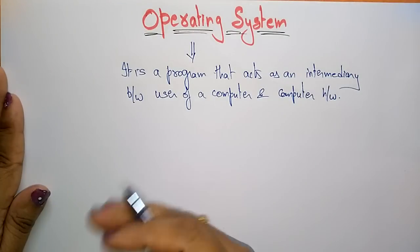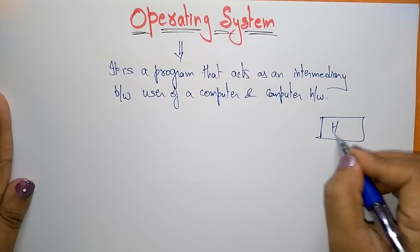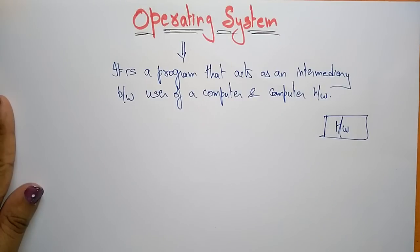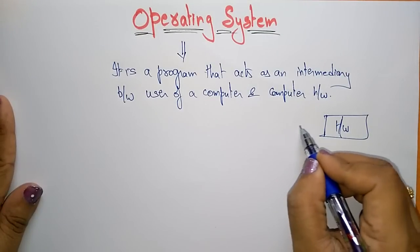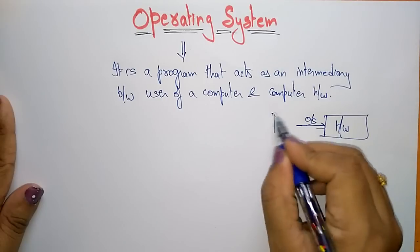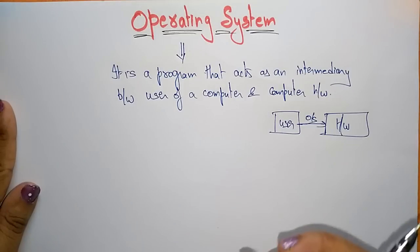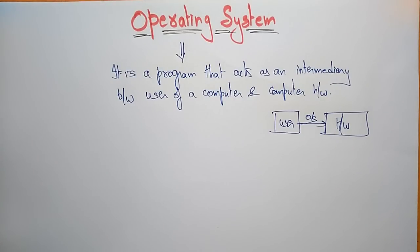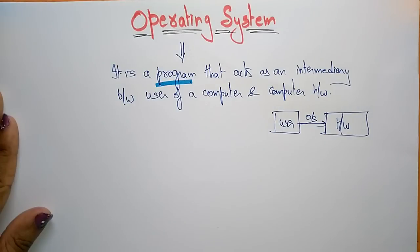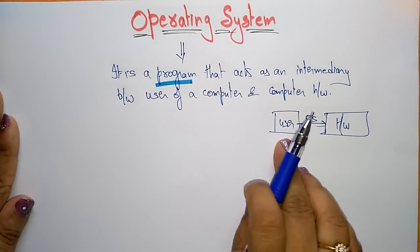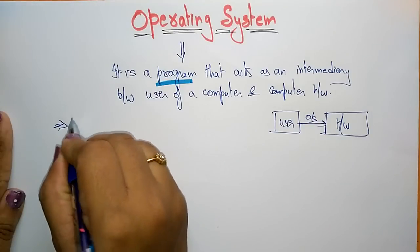The operating system acts as an interface between the user and the computer hardware. In your computer you have hardware parts, and if you want to work those hardware parts you need to install some software to run them. So the operating system acts as an interface between the user and the computer hardware. It is a software, a program, that acts as an intermediary between the user and the computer hardware.